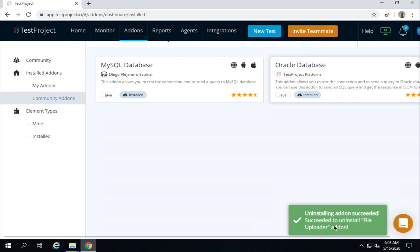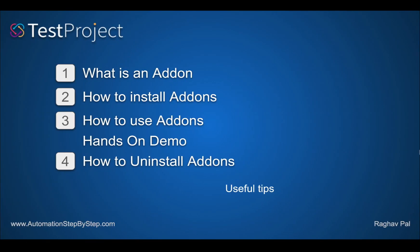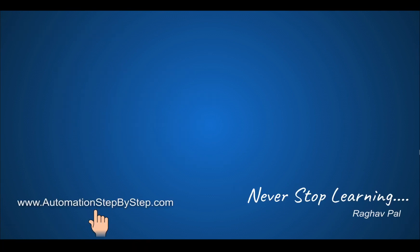Test Project will show you this message if you are already using the add-on. You can choose to uninstall anyway. I click on uninstall and now it is uninstalling. Uninstall is successful. This is how you can uninstall add-ons in Test Project. I hope this session was very useful for you. Please try some more examples, and if you face any issues let me know in the comments below. Thank you for watching.